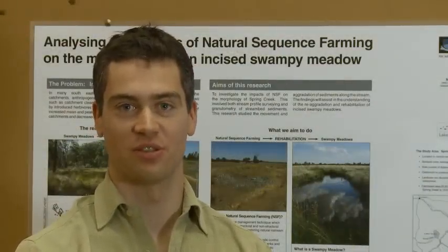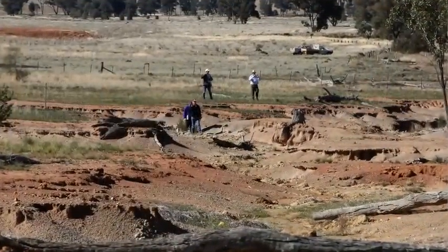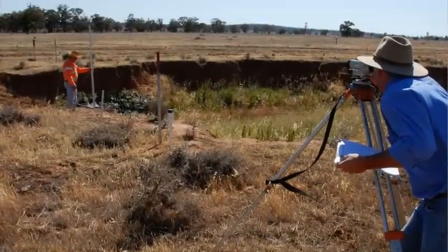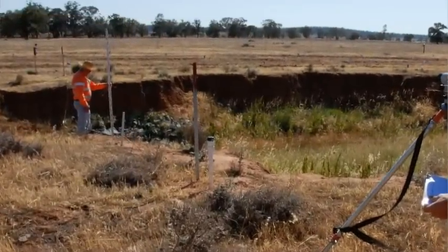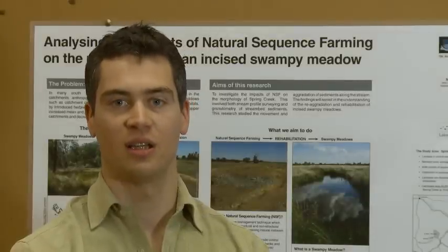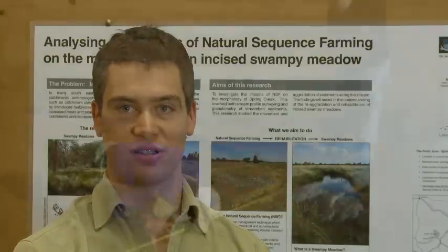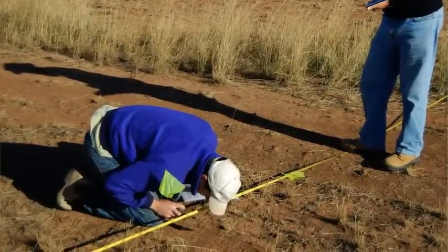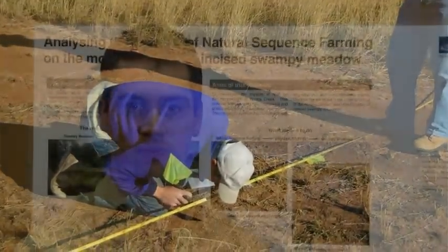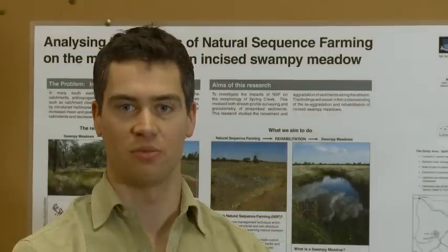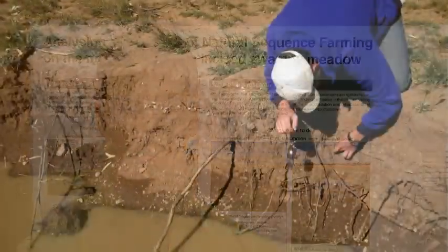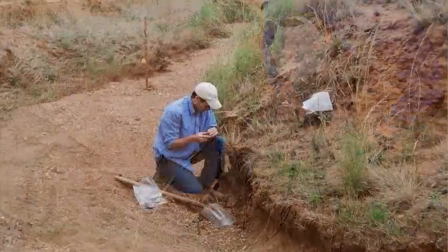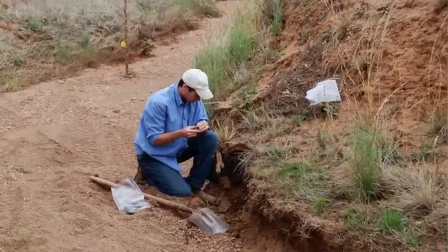In February 2009, I went to the Spring Creek catchment to begin collecting data. This involved taking cross-sectional surveys of the stream, collecting stream bank sediments as well as sediments from throughout the floodplain, and undertaking landscape function analysis along various transects established earlier by another ANU student. This data provided an opportunity to examine temporal changes in stream bank profiles, landscape functionality, and sediment diversity.